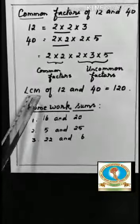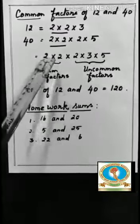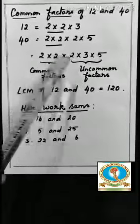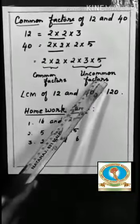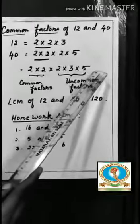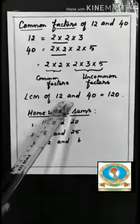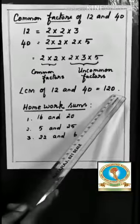Now how to get the LCM of 12 and 40? For this we multiply the common factors and uncommon factors. That is 2 into 2 into 2 into 3 into 5. Here the answer is 120. So the LCM of 12 and 40 is 120.